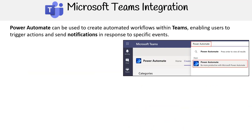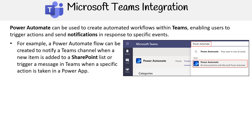Power Automate can be used to create automated workflows within Teams, enabling users to trigger actions and send notifications in response to specific events. For example, a Power Automate flow can be created to notify a Teams channel when a new item is added to a SharePoint list, or trigger a message in Teams when a specific action is taken in a Power App.